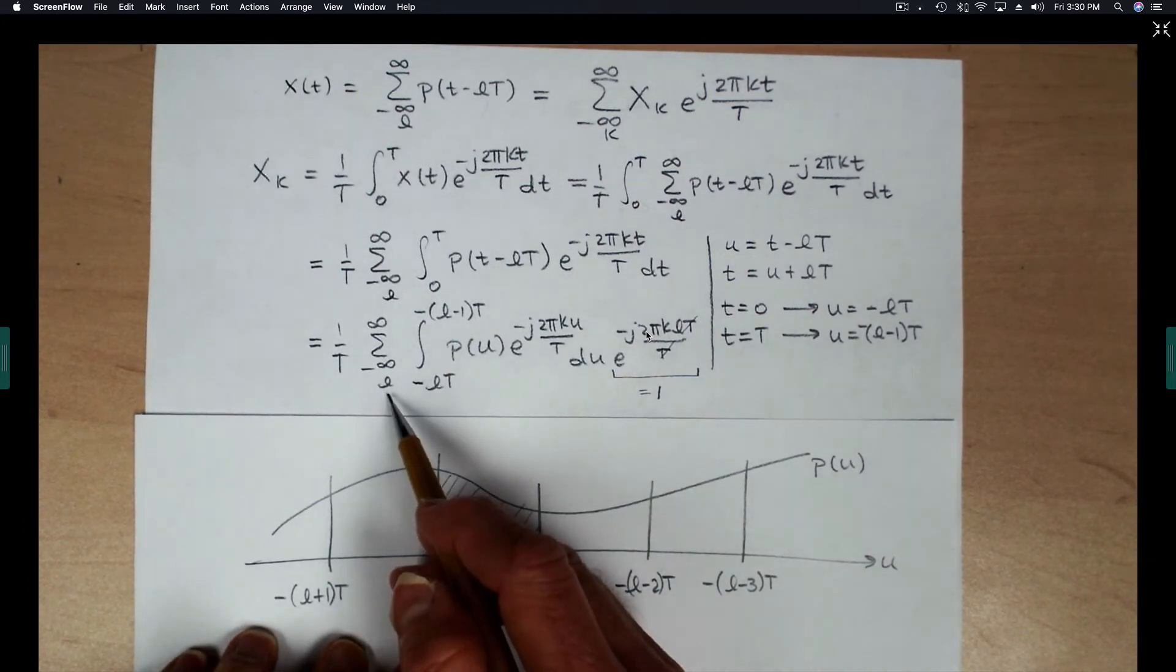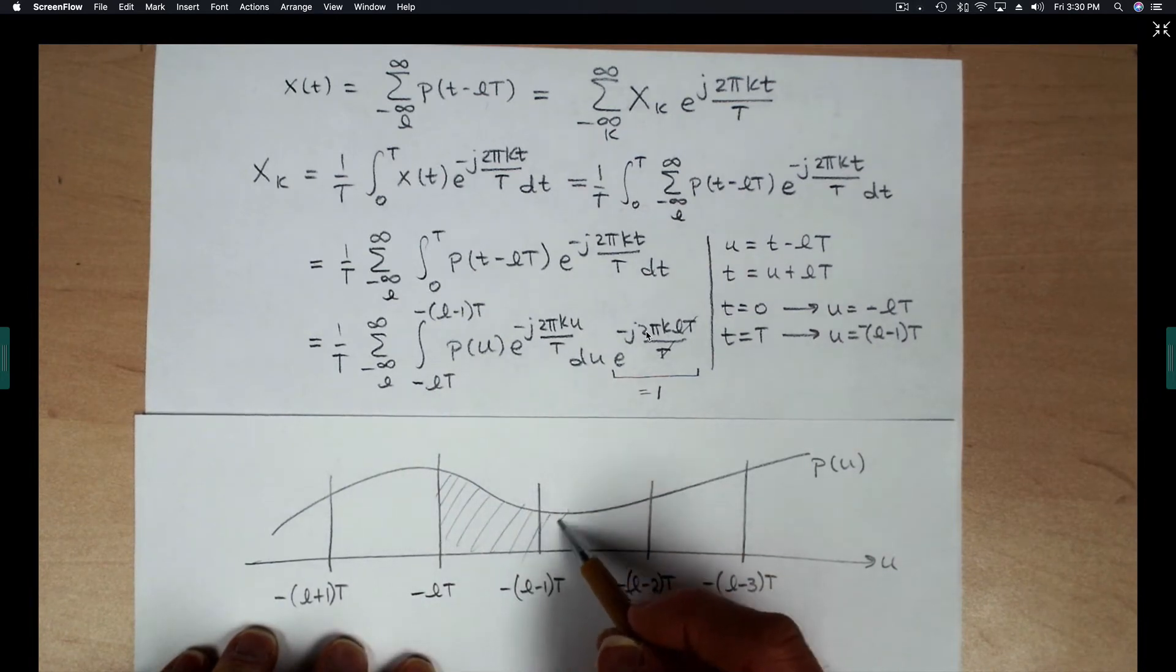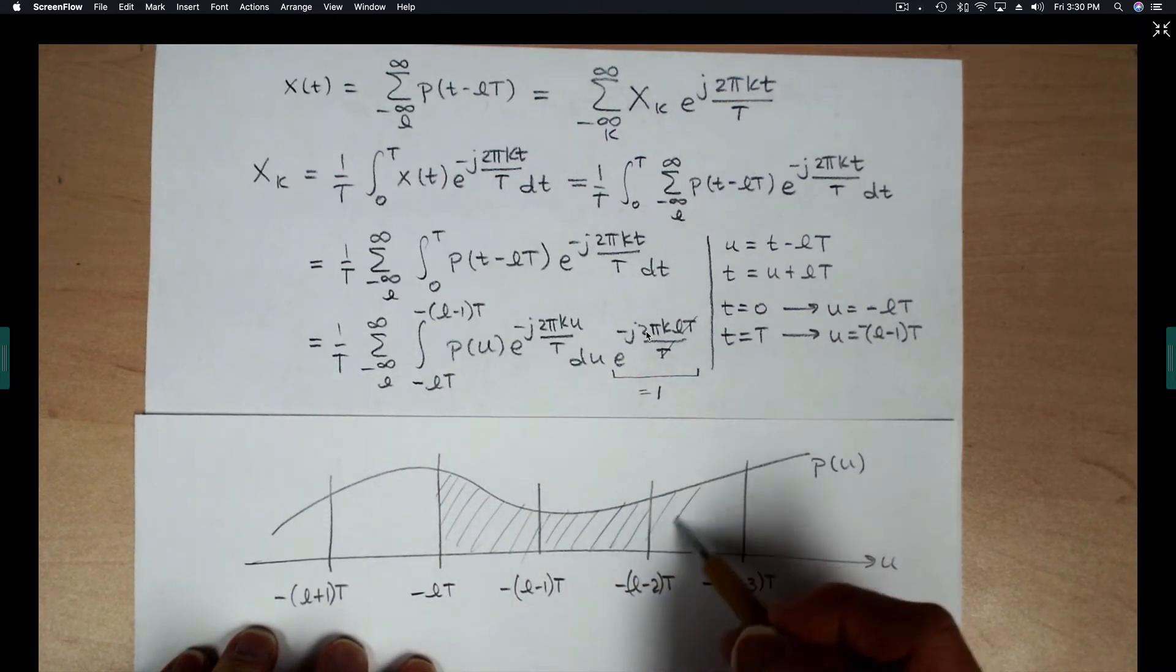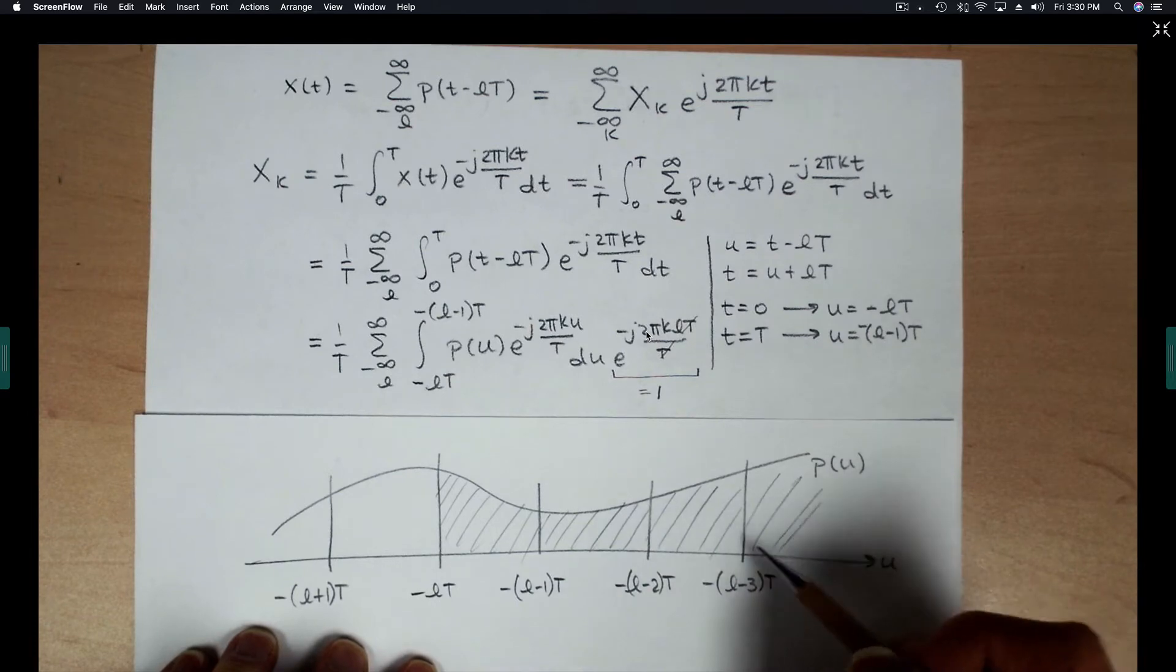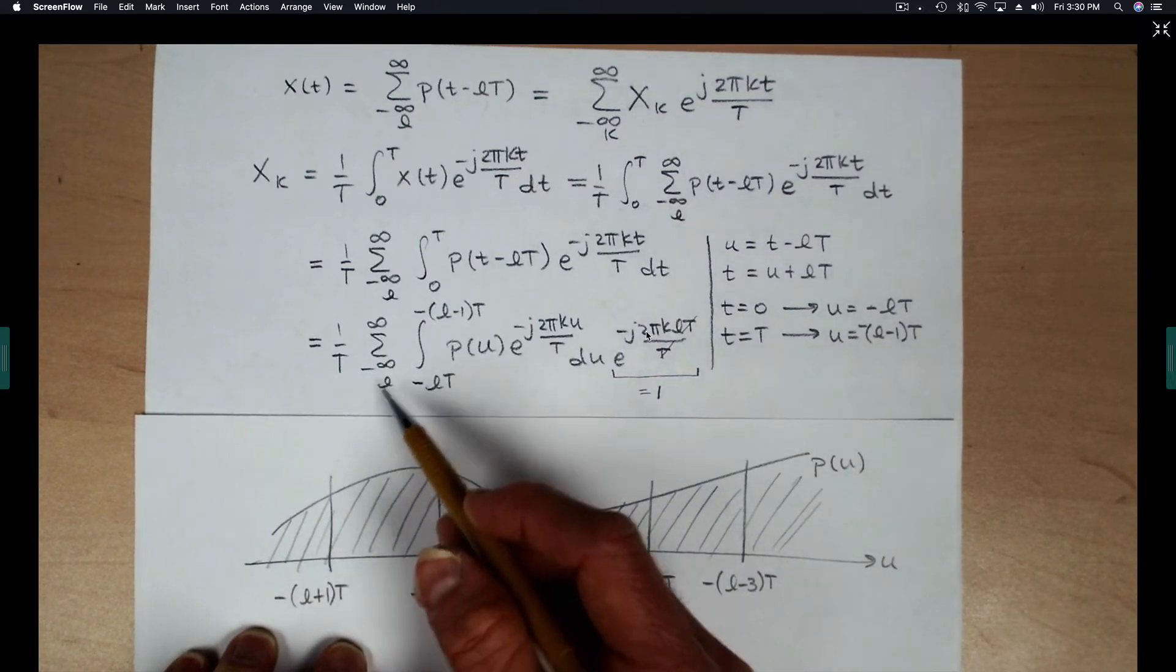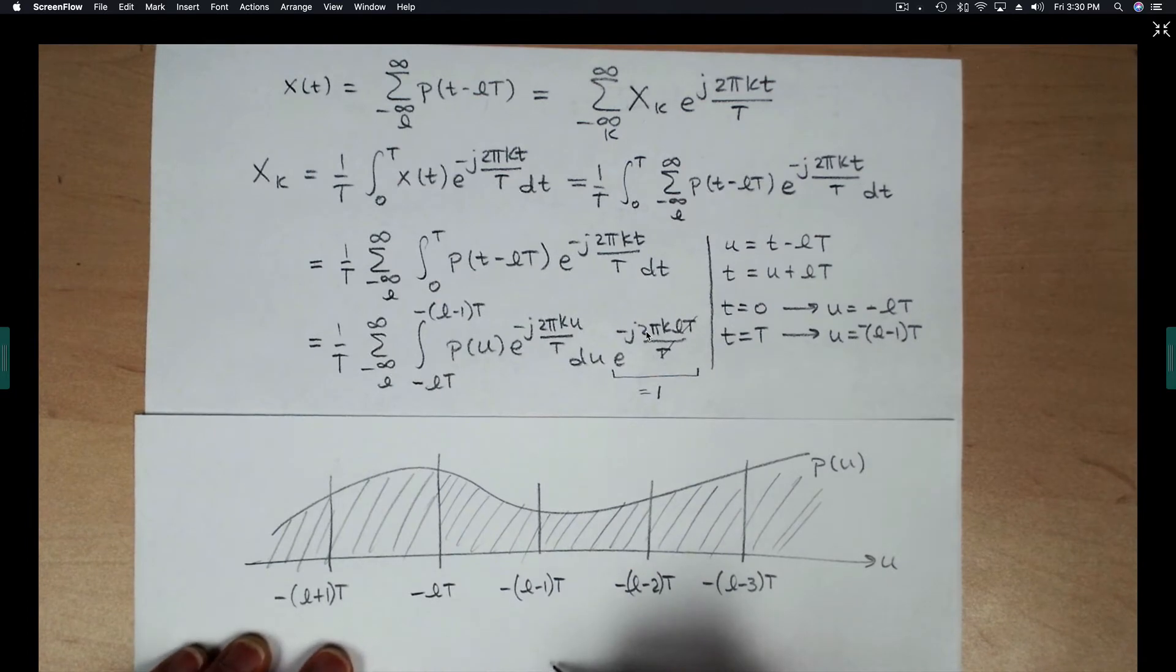And then what the summation is telling us to do is add that to the areas of all of the other integrands. And we sum from minus infinity to infinity.